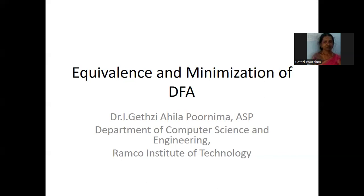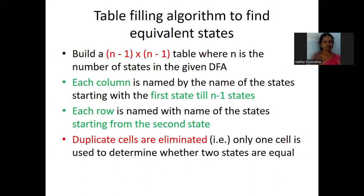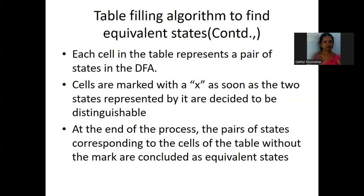In order to reduce the states, we need to merge the equivalent states. So when are states said to be equivalent? We are going to discuss an algorithm called the table filling algorithm. This table filling algorithm helps you find the equivalent states. For example, taking a DFA with n number of states, you have to build an (n-1) × (n-1) table, where n is the number of states in the given DFA.